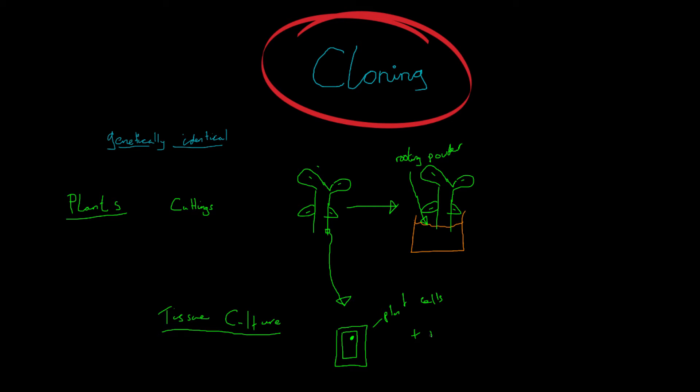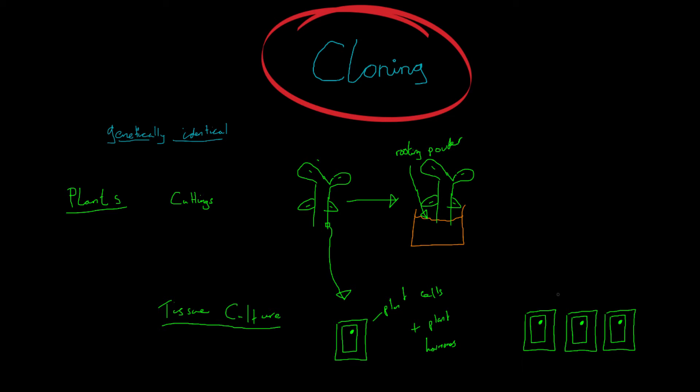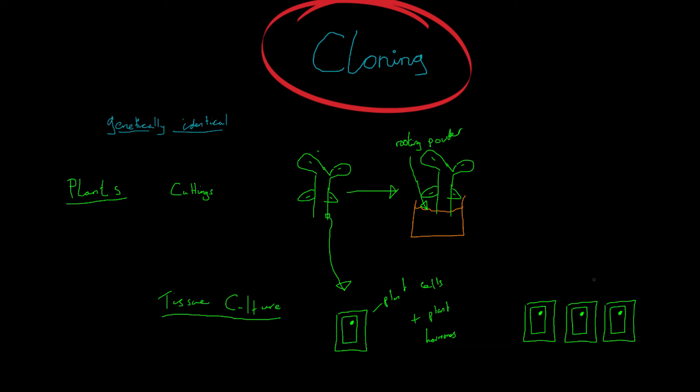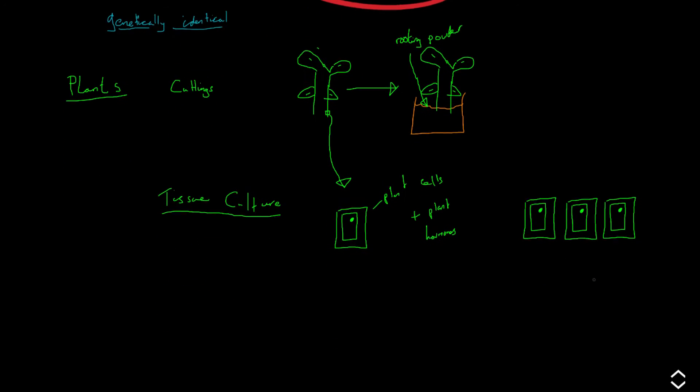If we then add some plant hormones, so plus plant hormones, we will end up with a fair few of these guys. So there we go. We've added some plant hormones and now we have multiplied these plant cells. And what we then do is we add some plant hormones, some different plant hormones. These aren't the same as the plant hormones we added before. These are a different set of hormones, but you don't need to know what they are. And all of these cells, this one and this one and this one will go on to form some new plants. And these plants will all be clones of the original.